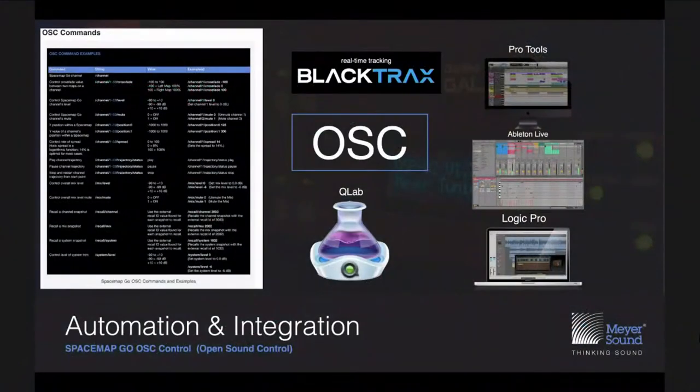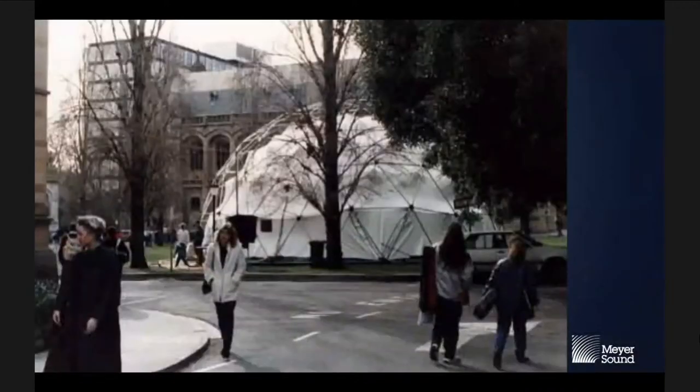SpaceMap Go is designed to integrate with all sorts of workflows, whether it's a live mix workflow or a museum installation, supporting protocols like OSC and RTT RPM — which is what BlackTrax uses for its tracking protocol. That's a big part of the product.